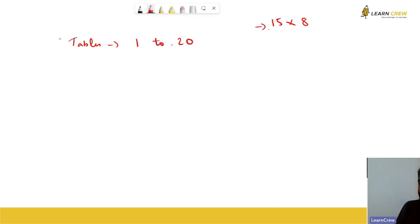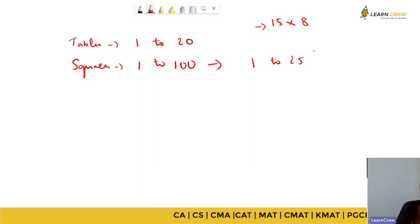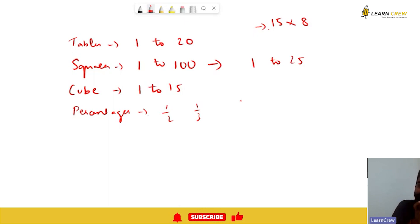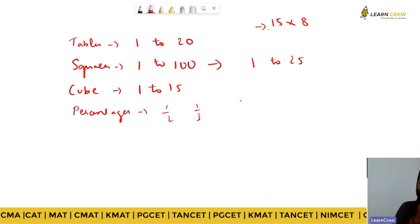First, tables from 1 to 20. If that is thorough, then squares 1 to 100. In order to know 1 to 100, your squares from 1 to 25 should be known. After that, I taught you the method. For those who didn't attend that class, I'll teach you again. Then cubes 1 to 15, and apart from this, you should be aware of your percentages—for example, if it is half, 1 by 3, 1 by 4, 1 by 11, 1 by 15, 1 by 16. All these things you should be aware of.